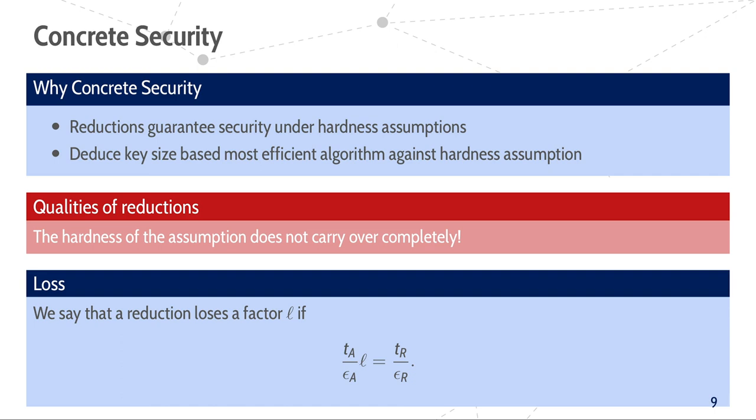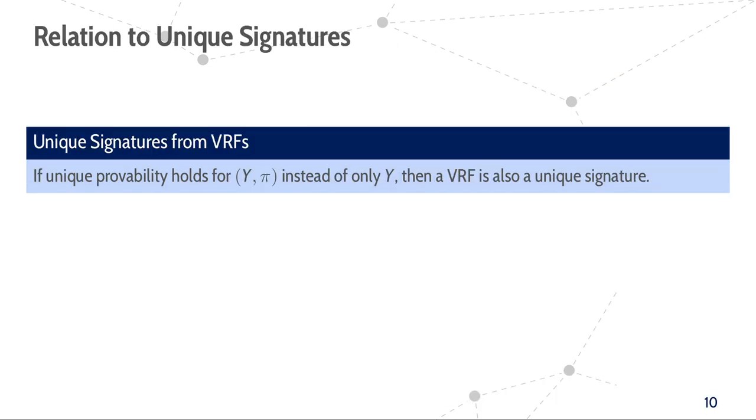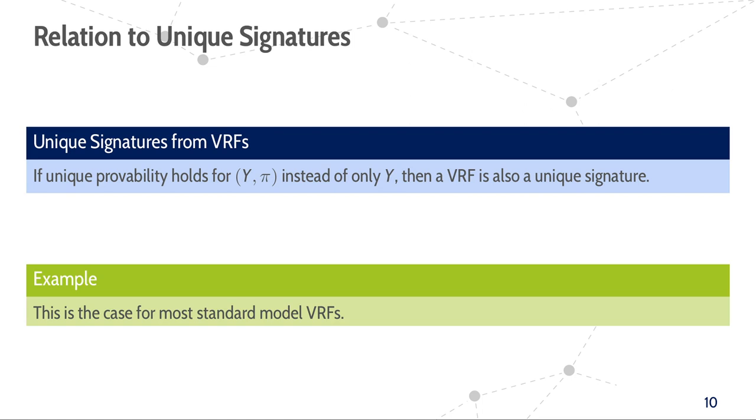Before we look into the loss of VRFs, let us first look into the loss of a closely related primitive, unique signatures. That is, signatures where there only exists a unique valid signature for each message. These are closely related to VRFs in the sense that if not only the VRF output Y but also the proof pi of a VRF is unique, then the VRF is also a unique signature scheme. For the transformation it then suffices to just consider the pair of VRF output and proof as a signature. Indeed, most VRFs in the standard model have this property.